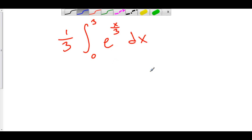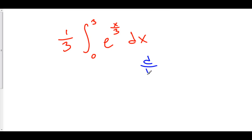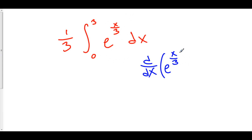We want to find the antiderivative of e to the x over three. So let's play around a little bit. We know that the derivative of e to the x is e to the x. But here we don't have e to the x — we have e to the stuff. So let's try taking the derivative of e to the stuff and see if we can come up with something that looks like e to the x over three.